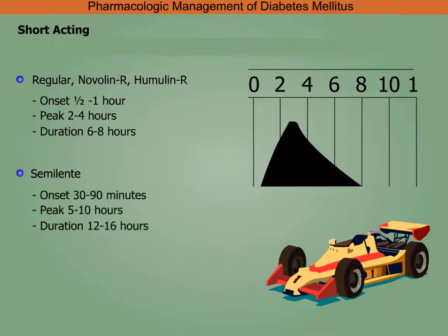Semilente has an onset in 30 to 90 minutes, peaks in five to ten hours, with a duration of 12 to 16 hours.